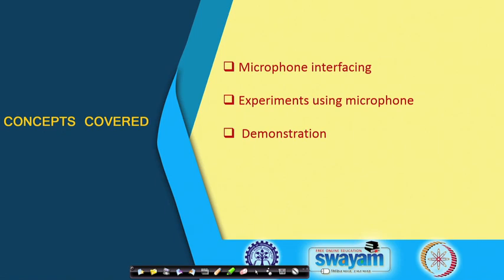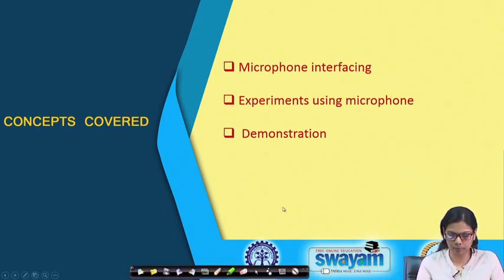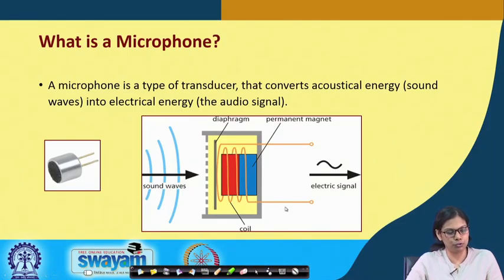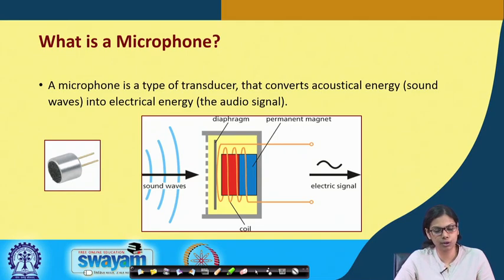In this lecture I will be discussing about microphone interfacing and some experiments using a microphone, and finally I will demonstrate. A microphone is a type of transducer that converts acoustical energy, that is sound waves, into electrical energy, that is the audible signal.